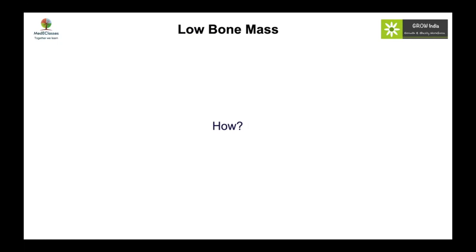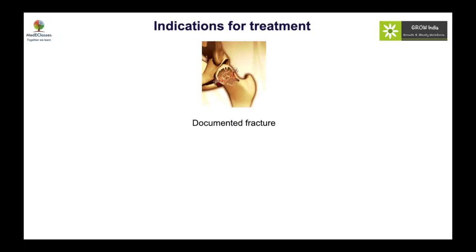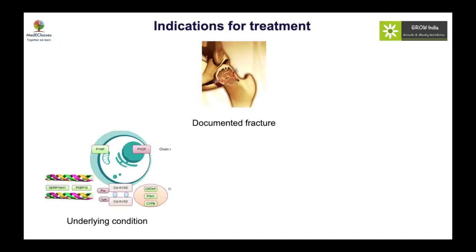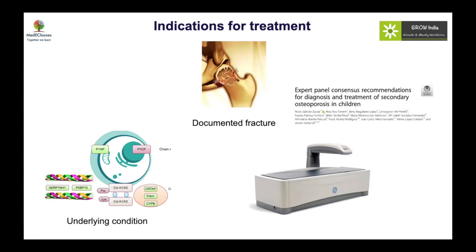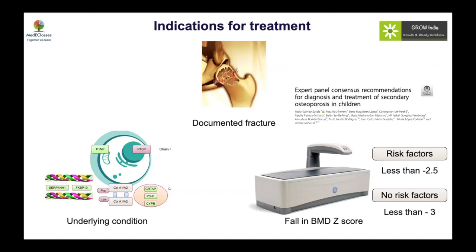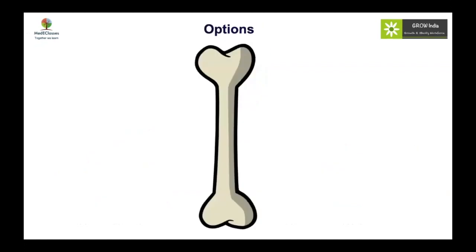Once low bone mass is identified, the next question is how to manage it. Only those with a documented fracture or an underlying condition like osteogenesis imperfecta require treatment, though newer guidelines suggest more liberal treatment. Expert panel recommendations consider a falling BMD Z-score during puberty: if there is a risk factor and the BMD Z-score is declining, treatment may be warranted. Without a risk factor, the cutoff becomes minus 3, so we consider both absolute value and the trend.